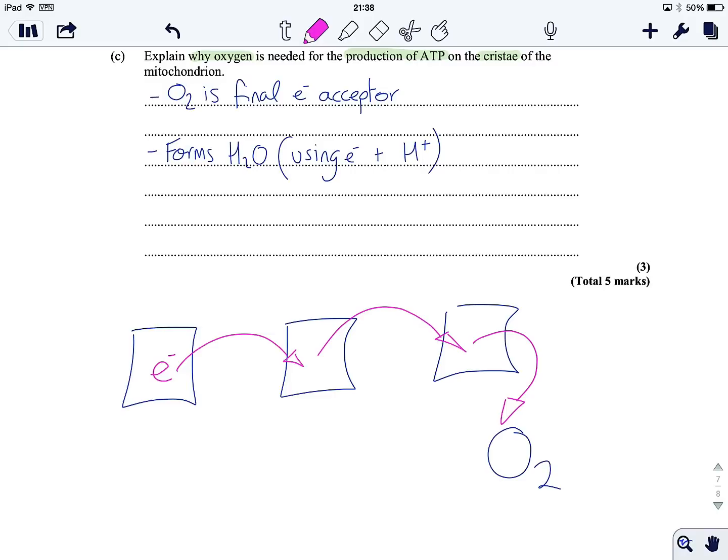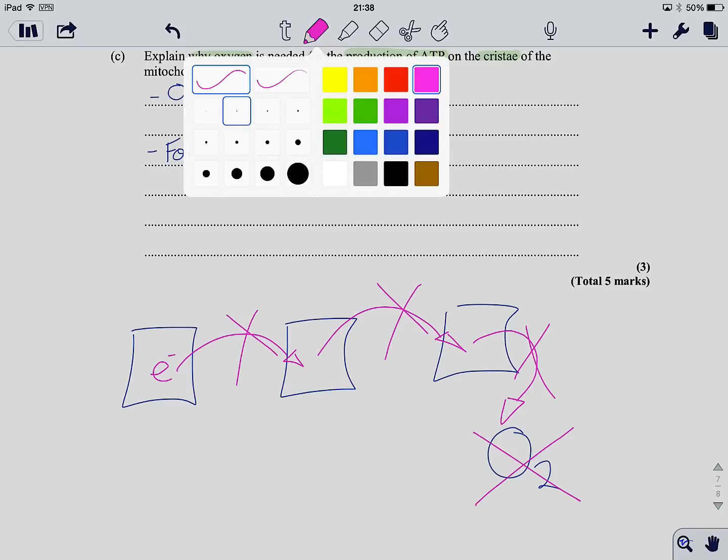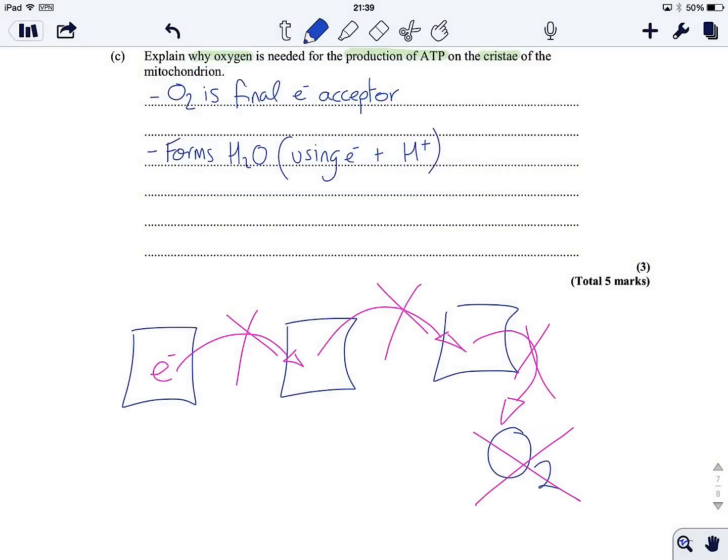And if we don't have oxygen, we can't do this, we can't do any of electron transport. And if we can't do electron transport, we can't re-oxidize the reduced coenzymes. And that means we can't do link, we can't do Krebs, we can't do anything apart from anaerobic respiration and glycolysis. So the consequence of not having oxygen would be that the whole chain would back up and wouldn't get any ATP.